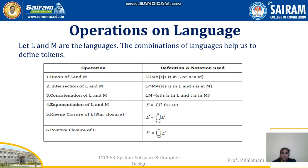Next we will see the various operations on languages. Let L and M be languages. The combination of languages helps us define tokens. There are three unary operations and three binary operations. The unary operations are exponentiation, Kleene closure, and positive closure. The binary operations are union, intersection, and concatenation. Union of L and M means a string belongs to either L or M. Intersection means the string belongs to both L and M. Concatenation of L and M means ST where S is from L and T is from M.